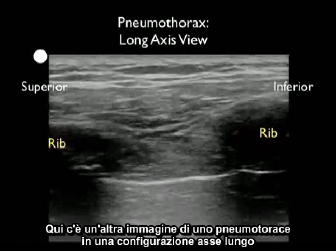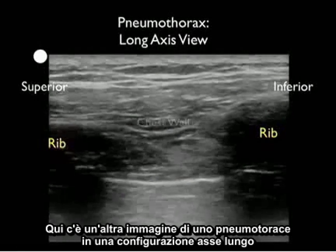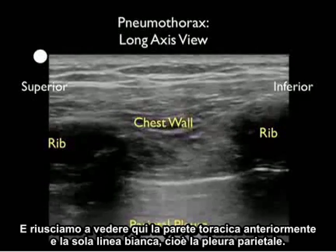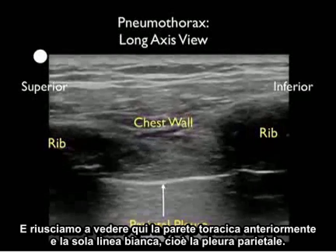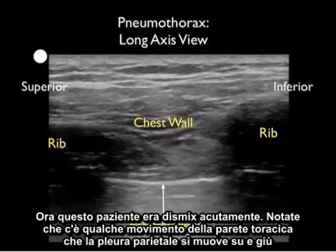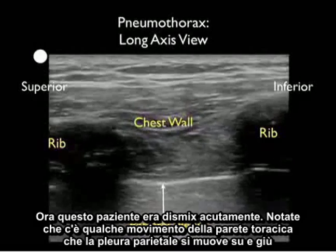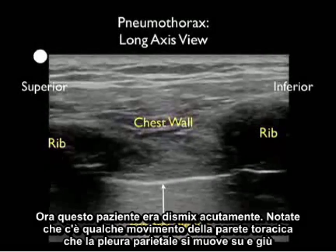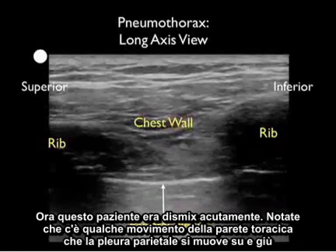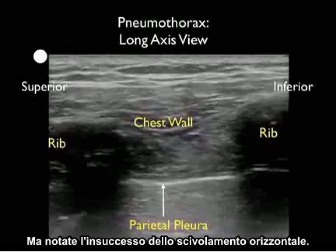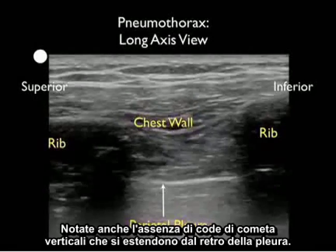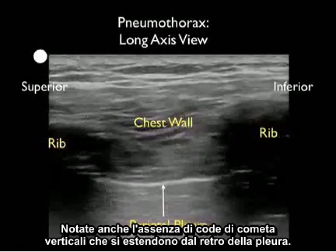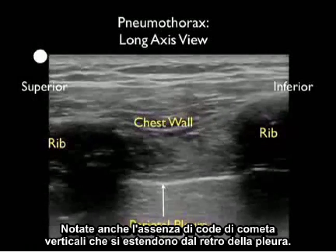Here's another image of a pneumothorax in a long axis configuration. We see the chest wall anteriorly and the single white line which is the parietal pleura. This patient was acutely dyspneic, so notice that there is some motion of the chest wall and the parietal pleura moves up and down, but notice the failure of horizontal sliding. Notice also the absence of any vertical comet tails coming off the back of the pleura.